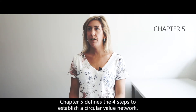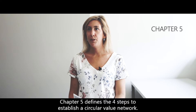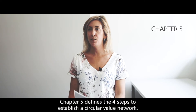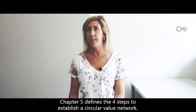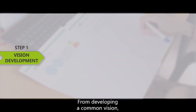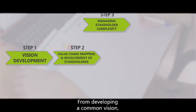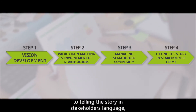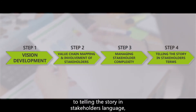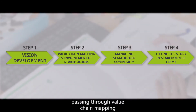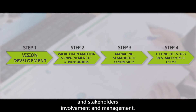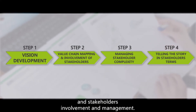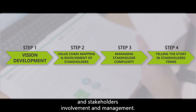Chapter 5 defines the four steps to establish a circular value network: from developing a common vision to telling the story in the stakeholders' language, passing through value chain mapping and stakeholders involvement and management.